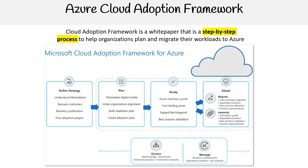The process is categorized into stages. Define Strategy: the focus is on understanding motivations, grasping the reasons for cloud adoption. Business outcomes involve identifying the desired results. Business justification covers validating the move's reasons. And the first adoption project is about kickstarting the cloud journey.